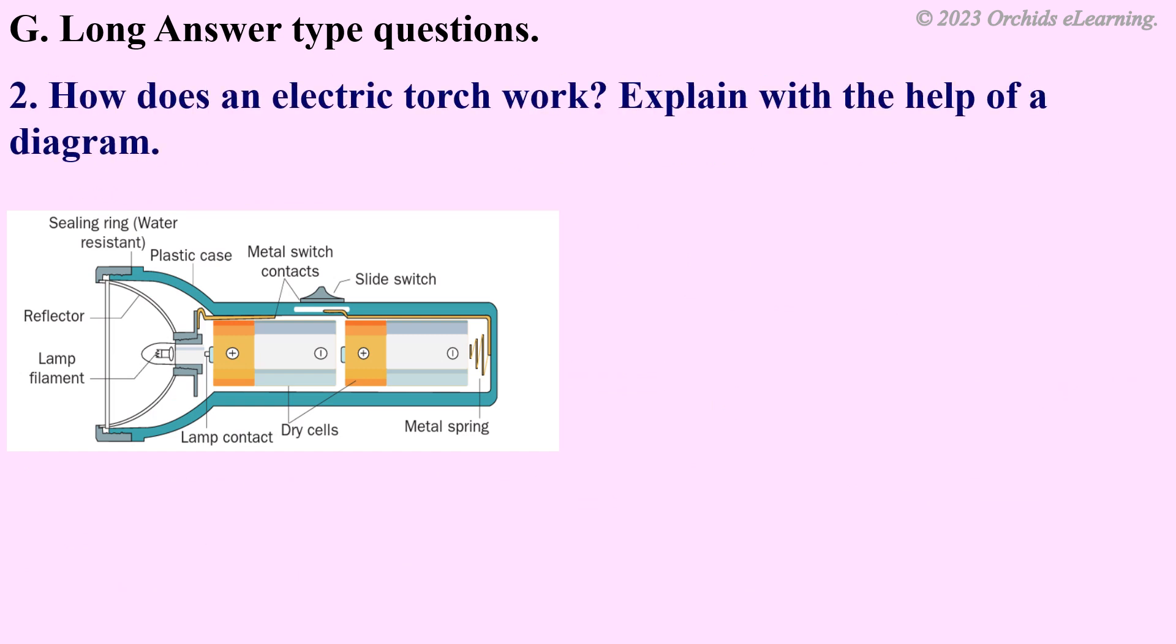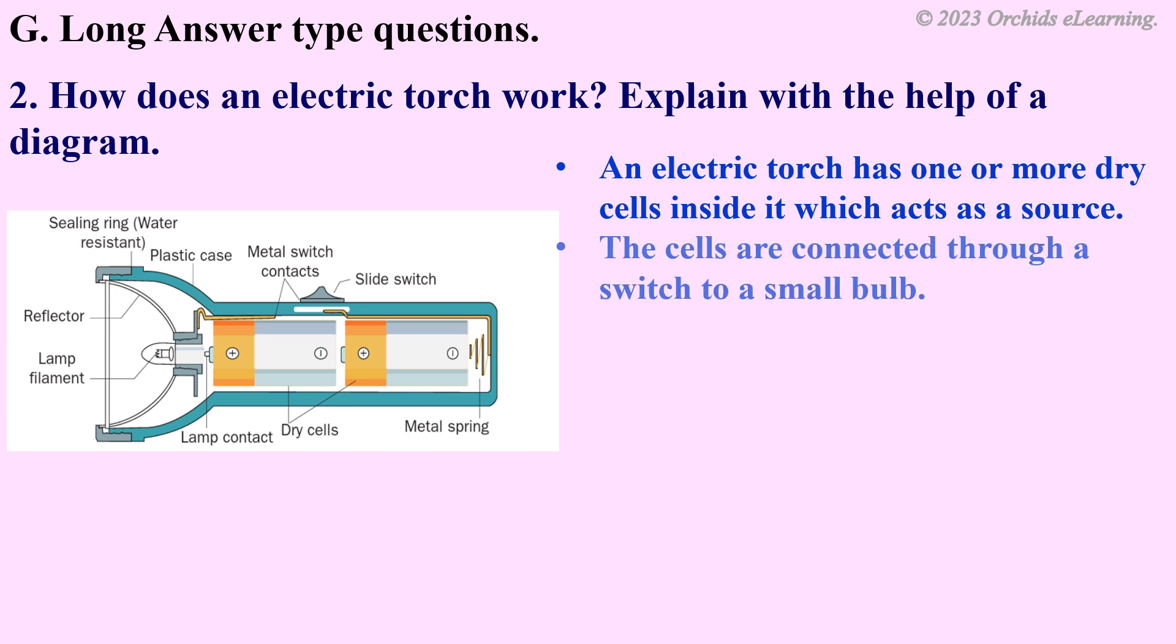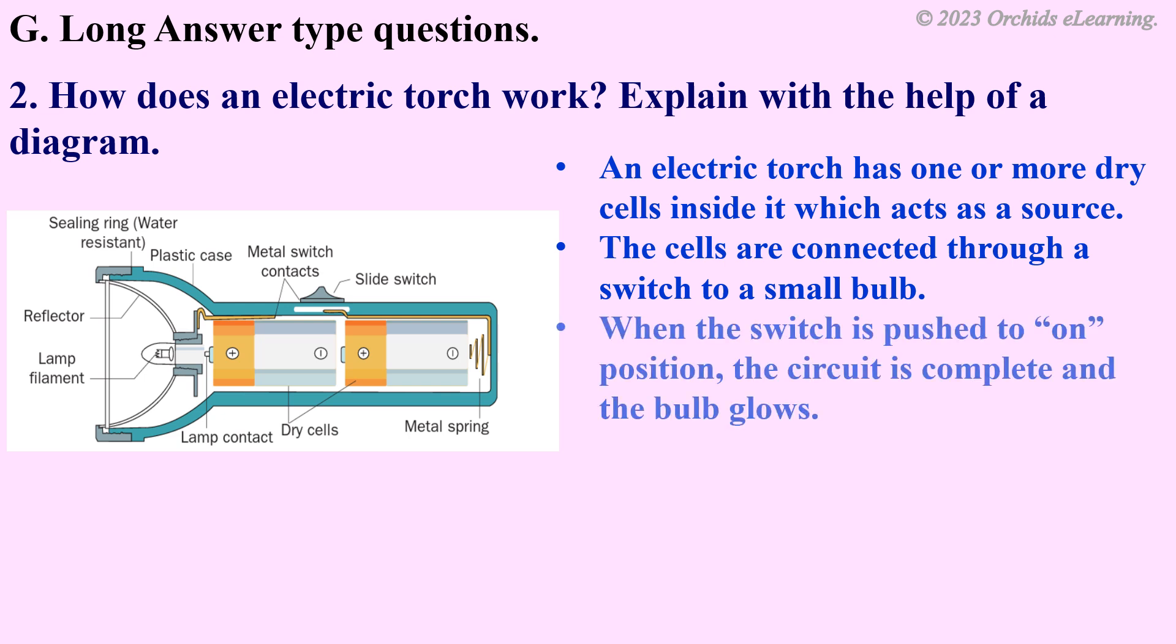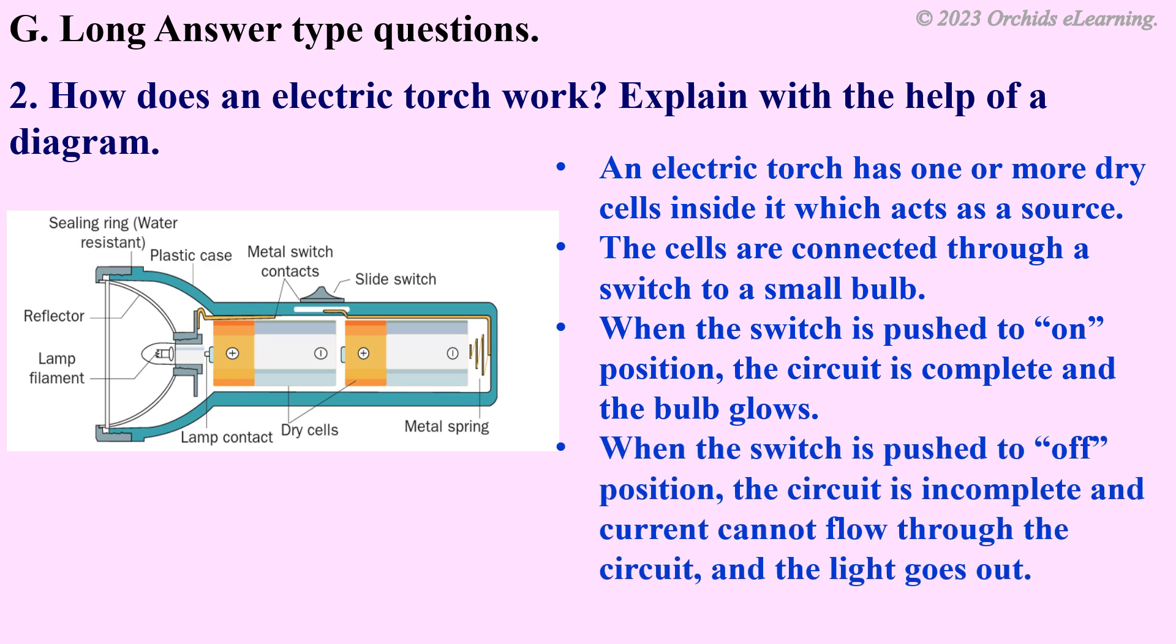How does an electric torch work? Explain with the help of a diagram. An electric torch has one or more dry cells inside it which acts as a source. The cells are connected through a switch to a small bulb. When the switch is pushed to on position, the circuit is complete and the bulb glows. When the switch is pushed to off position, the circuit is incomplete and current cannot flow through the circuit and the light goes out.